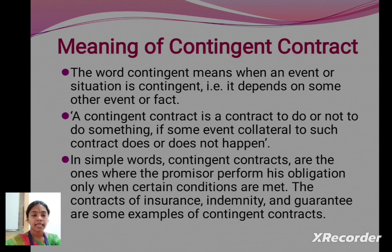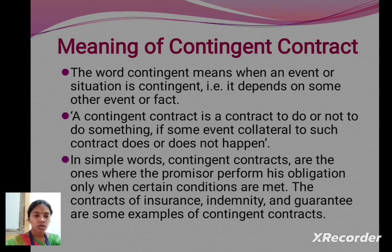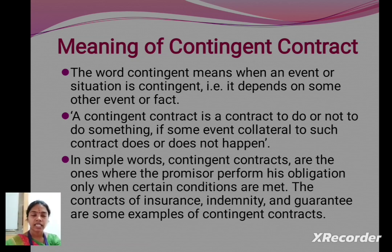Meaning of contingent contract: The word contingent means when an event or situation depends on some other event or fact. A contingent contract is a contract to do or not to do something, if some event collateral to such contract does or does not happen. In simple words, contingent contracts are ones where the promisor performs obligation only when certain conditions are met. The contracts of insurance, indemnity, and guarantee are some examples of contingent contracts.